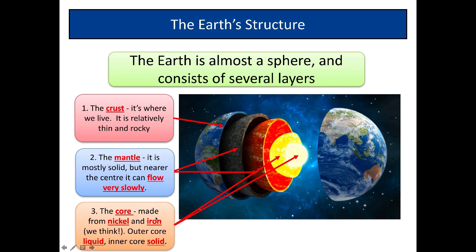Now right in the center we've got the core. Now we think, we don't know, no one's, we've never drilled down into the core. The furthest we've drilled is less than 20 kilometers into the Earth's crust so we don't know a great deal geologically about what's down here, but we think it's made from nickel and iron. The outer core, because of the huge temperatures down there, the outer core is actually liquid so all the metals and rocks are melted, and the inner core is solid.